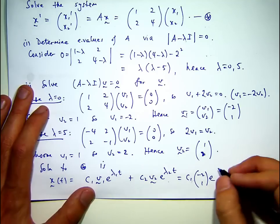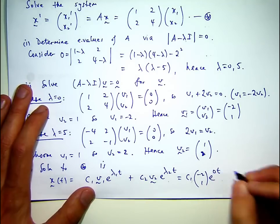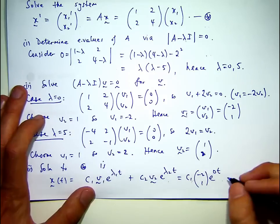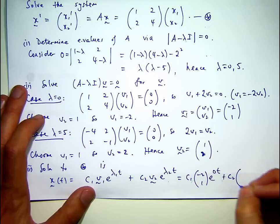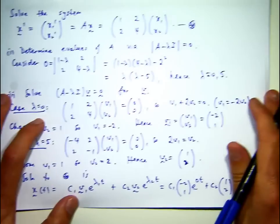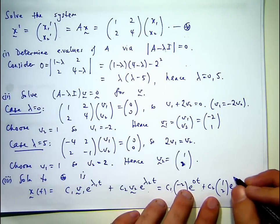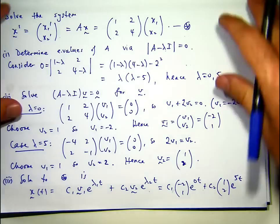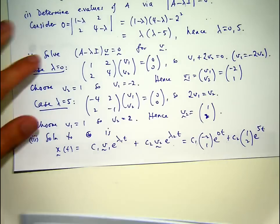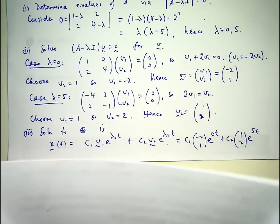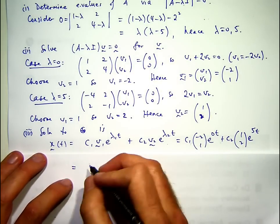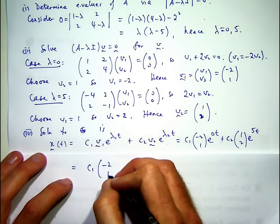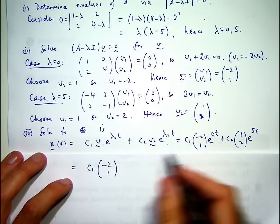Now we get e to the zero T because lambda equals zero in the first case. So essentially I'm just going to get the following. E to the zero T is just one.